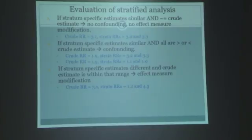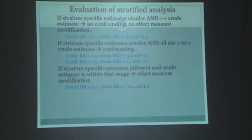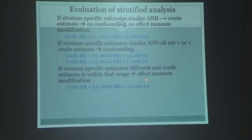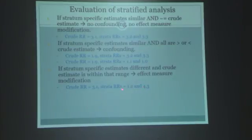Here you report the presence of effect measure modification. To understand whether that effect modification was positive or negative, you compare the stratum-specific estimates with the crude. In this subgroup, the effect moved from 3.1 down to 1.2—this is negative interaction, or antagonism. In the other subgroup, it boosted from 3.1 up to 4—this is synergism, or positive effect modification, or positive interaction.